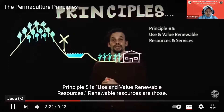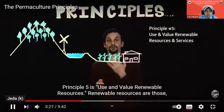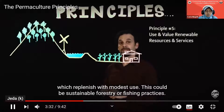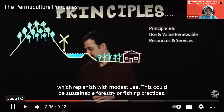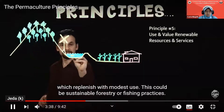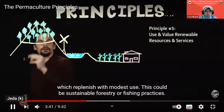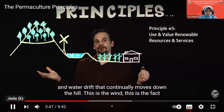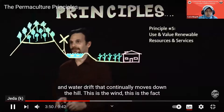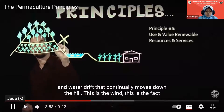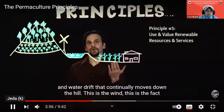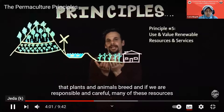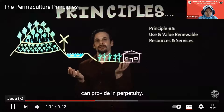Principle five is use and value renewable resources. Renewable resources are those which replenish with modest use — this could be sustainable forestry or fishing practices, or planting an orchard downslope from a forest to take advantage of the nutrient and water drift that continually moves down the hill. This is also the wind, and the fact that plants and animals breed — if we're responsible and careful, many of these resources can provide in perpetuity.